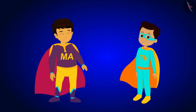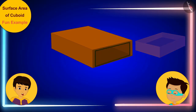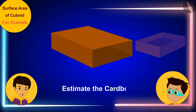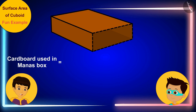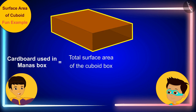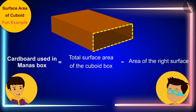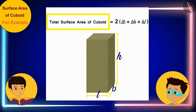Manas explains: his box opens from the right side, so the right surface is not present in his cuboid box. To estimate the cardboard used, he needs the sum of areas of the remaining surfaces. This sum can be found by subtracting the area of the right surface from the total surface area of the cuboid. He refers to the formula book for the total surface area formula.